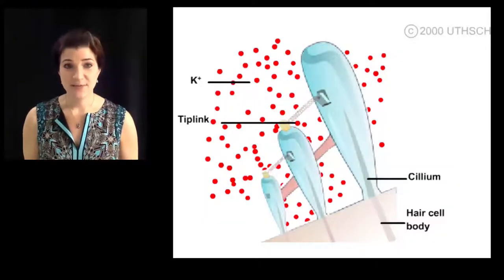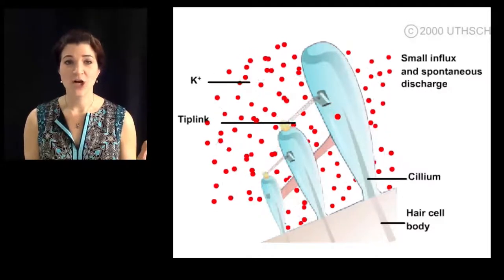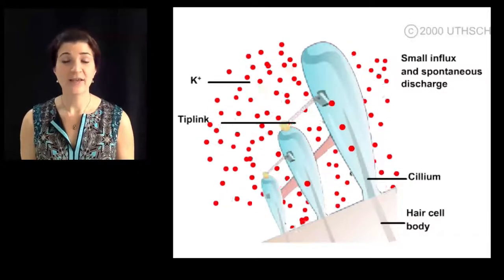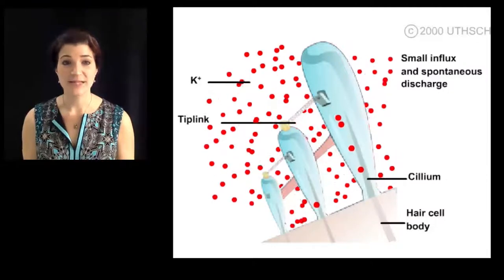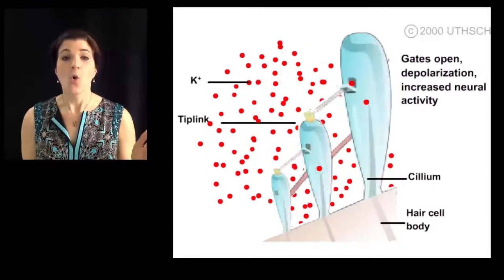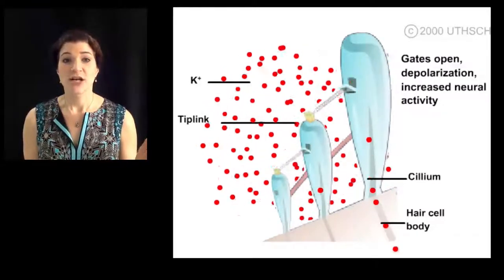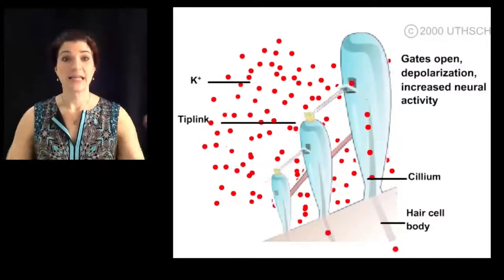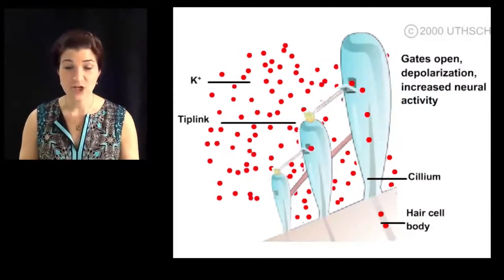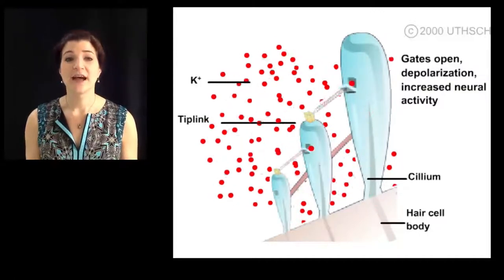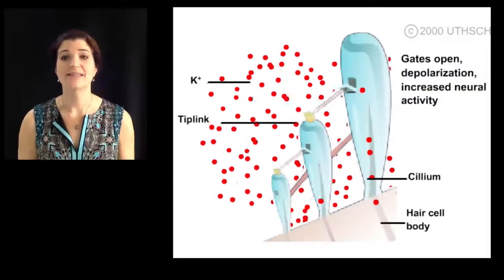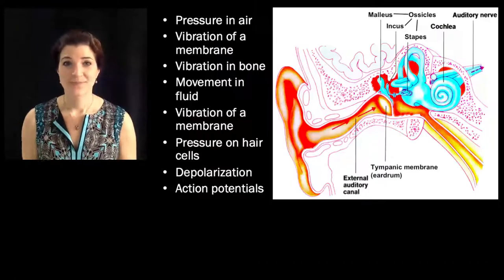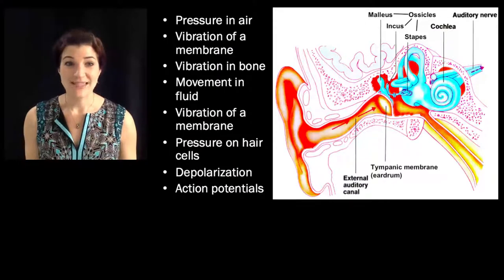In the absence of stimulation, the ion channels are leaking a little bit of potassium, leading to the resting baseline potential. When the ion channels are pulled open by the tip links, lots of potassium rushes in, the cell is highly depolarized, and action potentials occur.